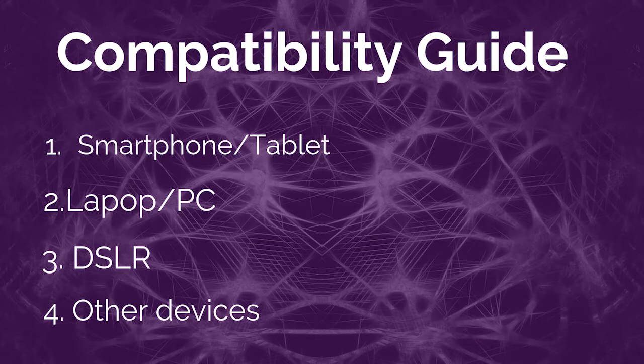Welcome to the compatibility guide video of Amputive Microphones. In this video, we will be talking about the compatibility issues related to 4 types of devices: Number 1, Smartphone or Tablet; Number 2, Laptop or PC; Number 3, DSLR; and Number 4, all the remaining devices. Any device which does not fall into the first 3 categories falls into the fourth category. In this video, we will only be talking about the compatibility issues — that means problems where you are not sure if the microphone is getting detected by your device or not.